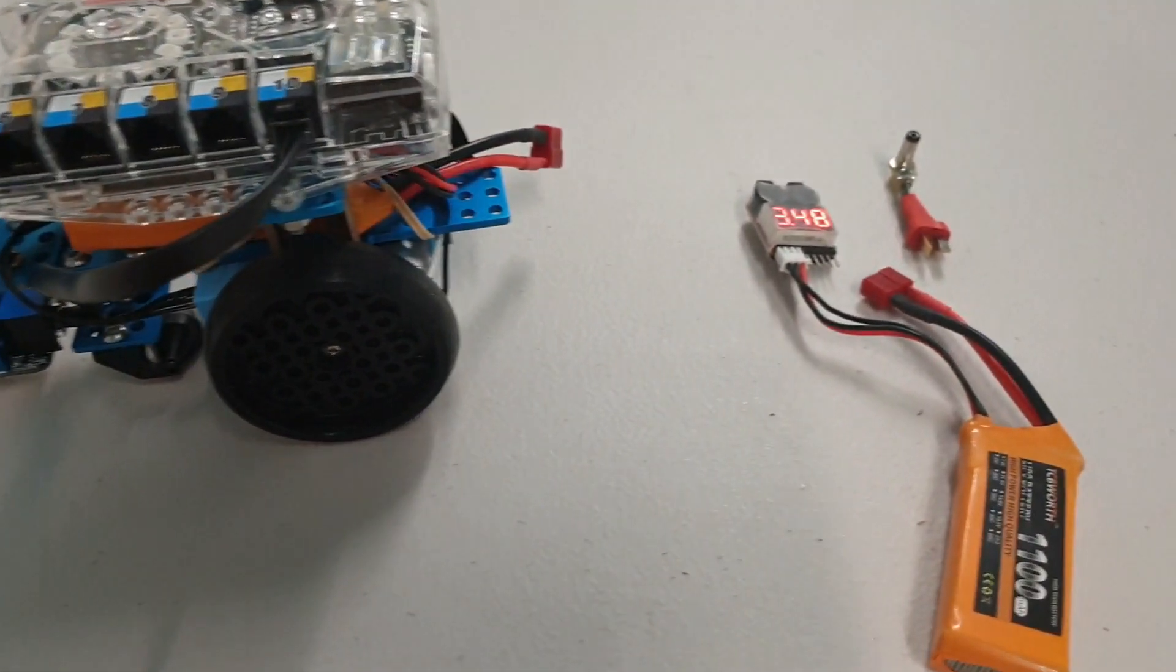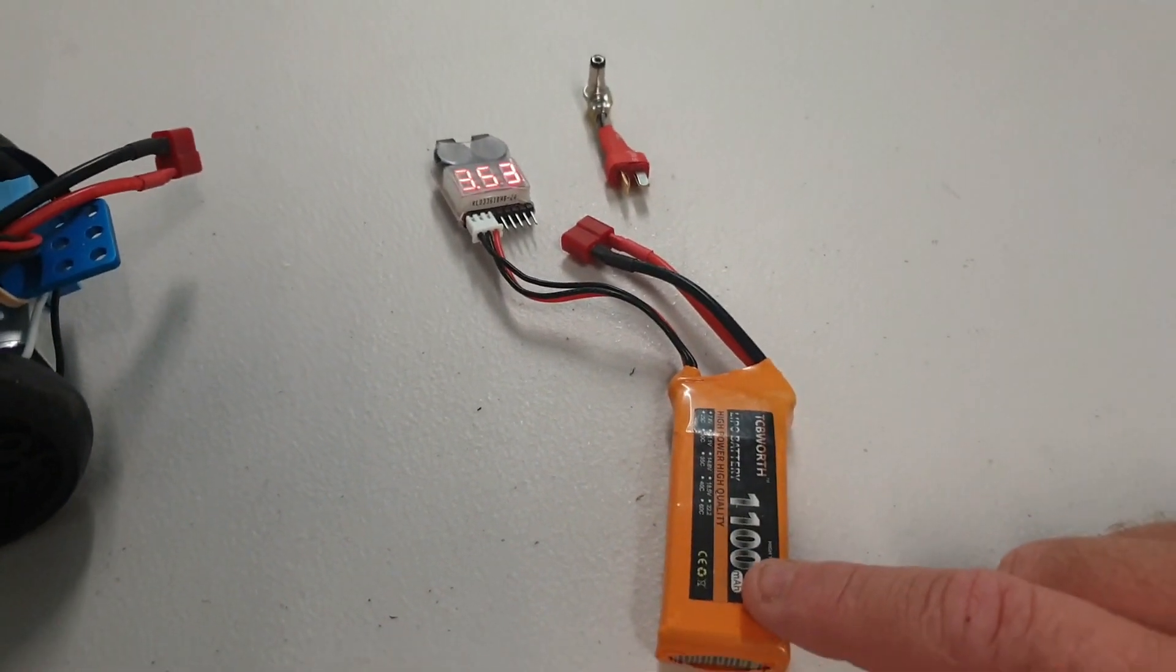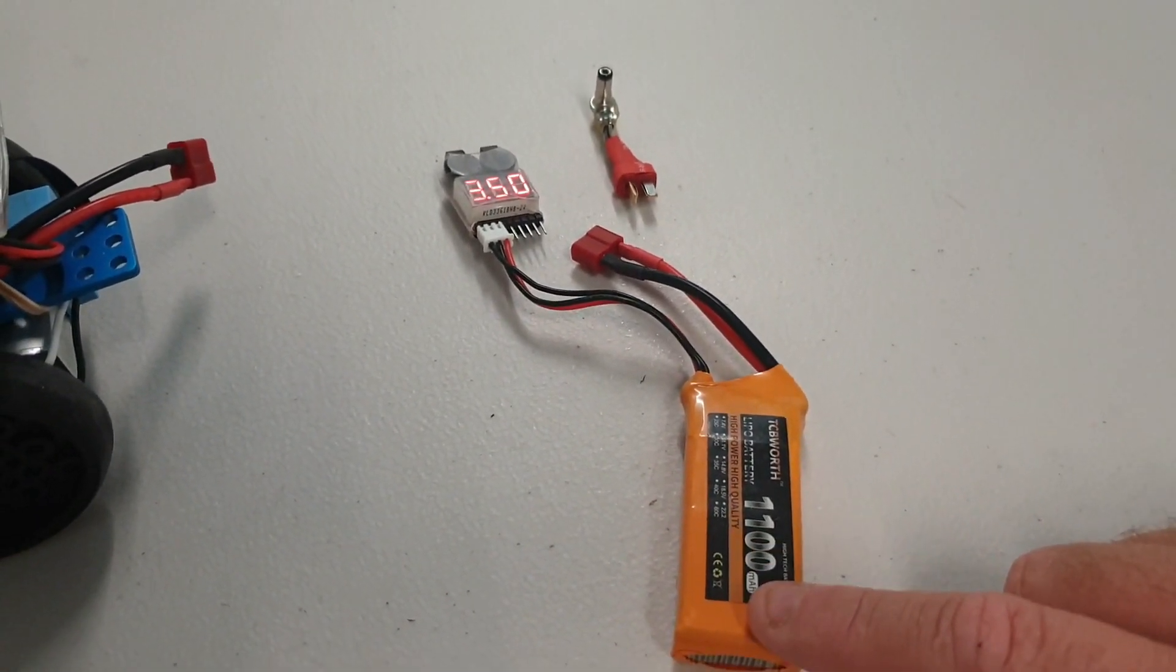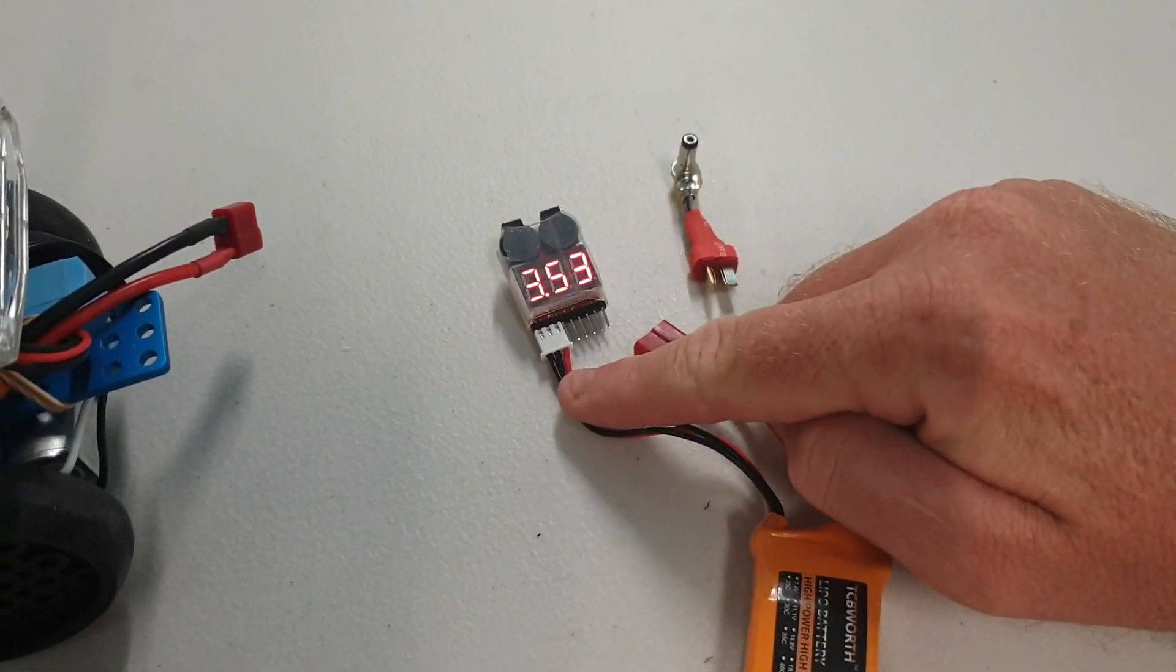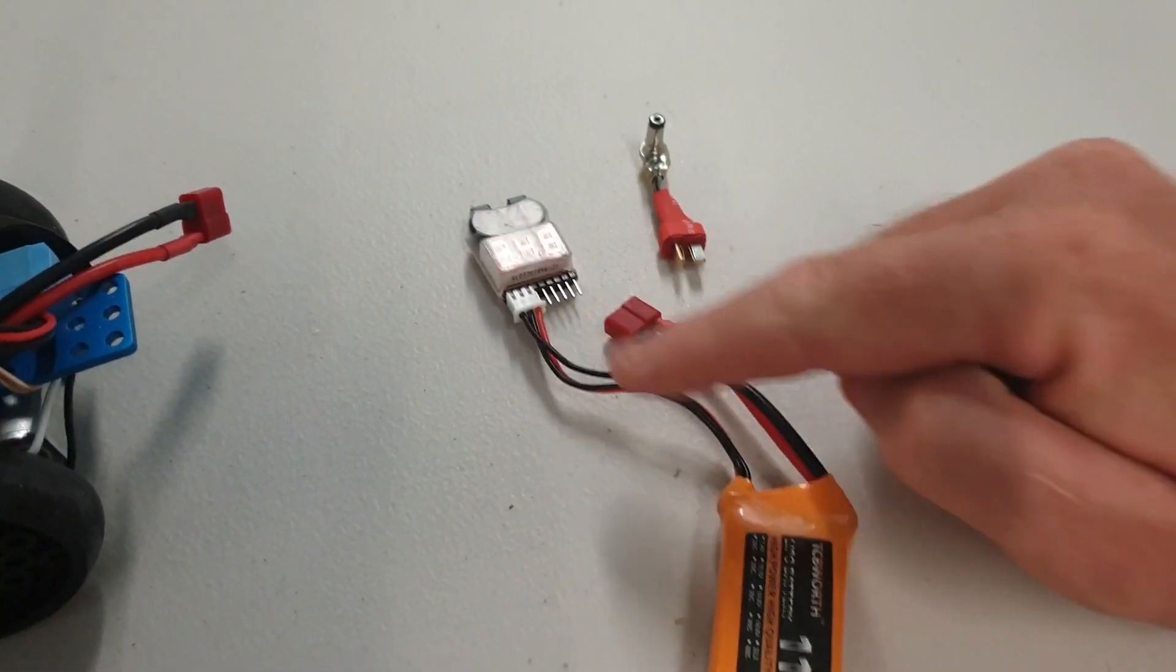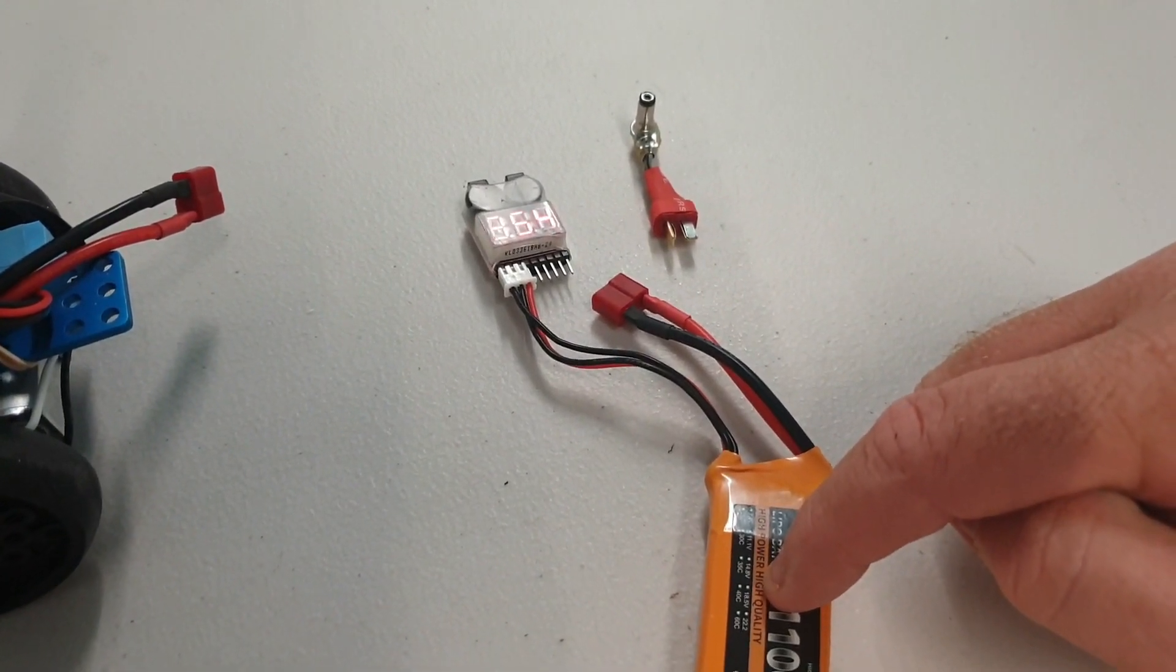Instead of using the battery that came with it, what I've done is I've used an 1100 milliamp hour two cell LiPo hobby battery. And always when I run these things, I always just put a hobby battery monitor on it, because if you run these totally flat they can catch fire when you try to charge them the next time.